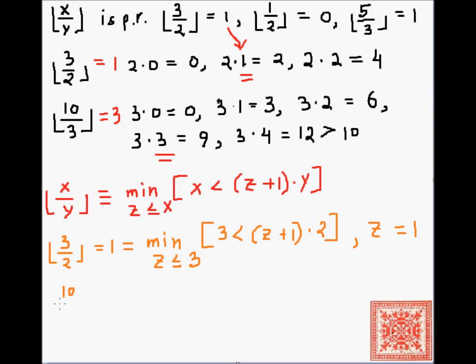And there's another example, 10 over 3, floor of 10 over 3. And that is equal to 3, which is the minimalization of z less than or equal to 10. That's x, such that 10 is less than or equal to z plus 1 times 3.